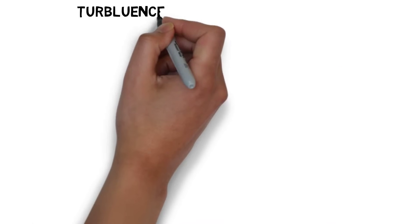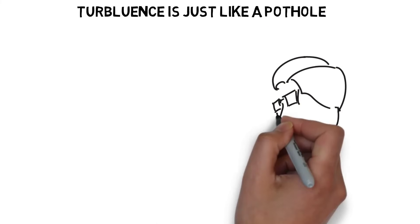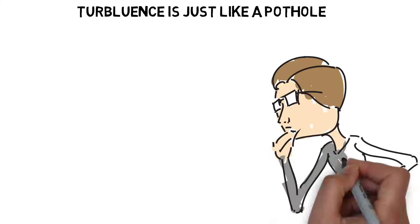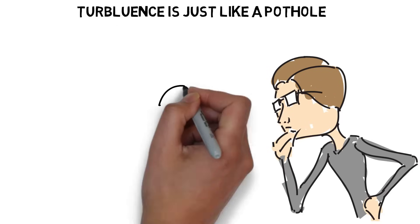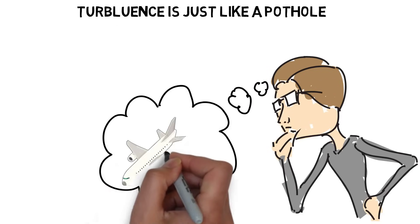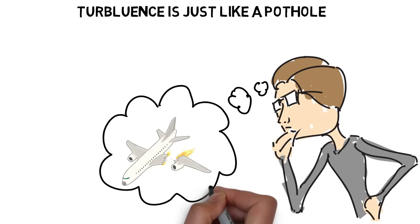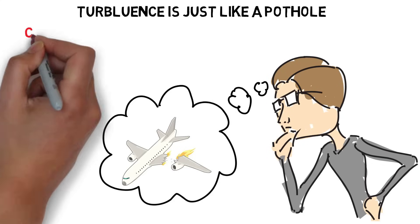4. Turbulence is just like a pothole. Turbulence isn't a safety concern. To pilots and crew, it's more of a nuisance. A plane cannot be flipped upside down, thrown into a tailspin, or otherwise flung from the sky by even the mightiest gust or air pocket.